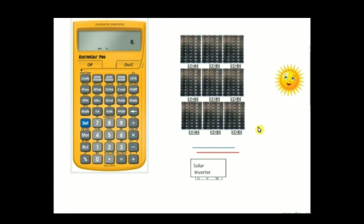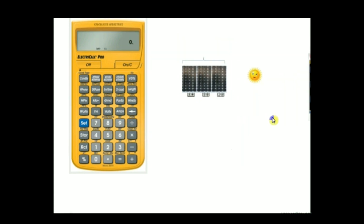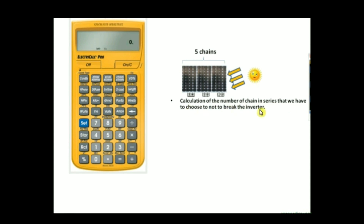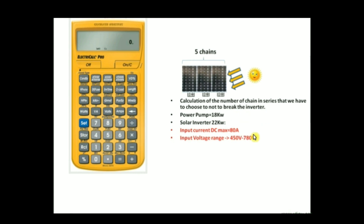Welcome to the tutorial of Electrical Pro, a software solution for electrical engineers. Today we're going to see how Electrical Pro solves an electrical problem in solar energy installation. We'll see the calculation of the number of chains in series that we have to choose, because we have to respect the voltage range and the input DC max current of the inverter to not break it. As an example, we're going to feed a submersible pump with 18 kilowatts of power using solar energy.